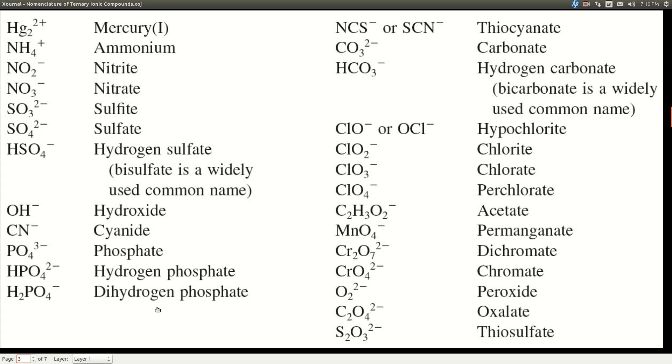And polyatomic, poly means many, so two or more. Atomic means atoms. Ions means they have a charge. So these are different than the compounds we've been naming because these have charges and they're ions. Most of these, you'll notice, are anions.